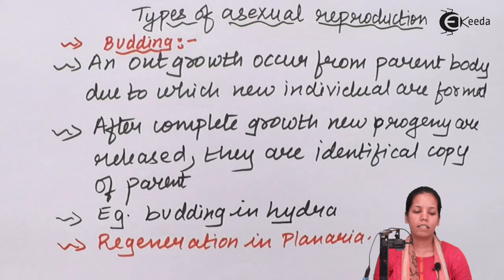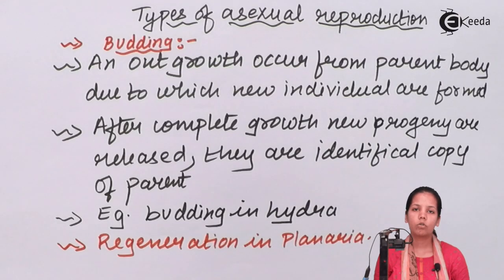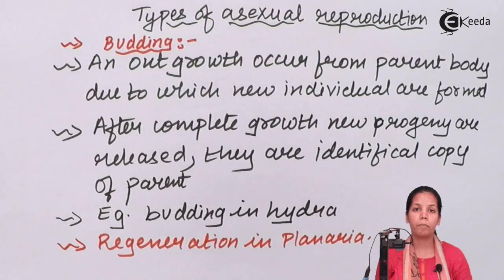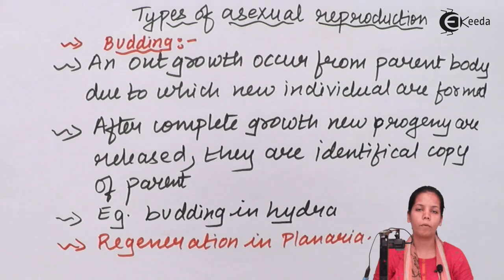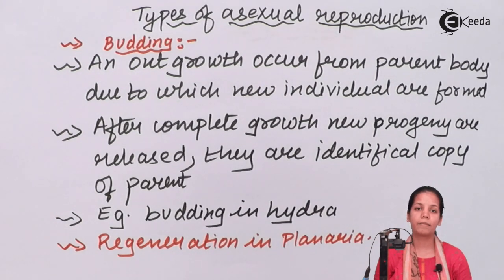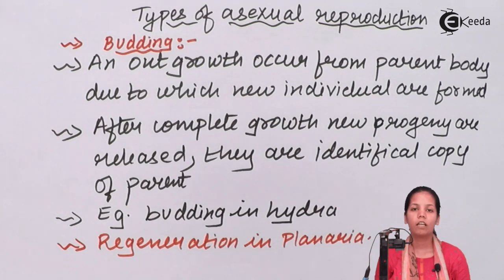In Asexual Reproduction, there is no involvement of two parents — that is, no two different gametes from two different parents come together to form offspring. There is only a single parent, and it is this parent that is going to give all its genetic material to its child.